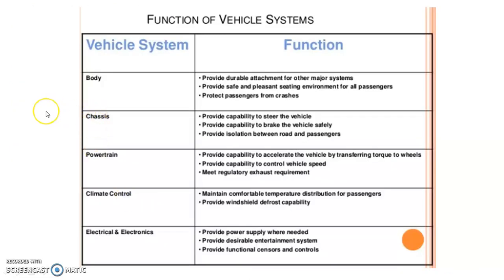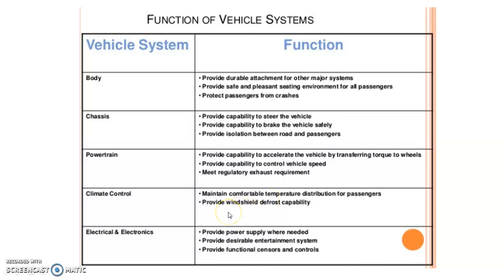Let us see what are the functions of vehicle systems. Body is the first vehicle system — it provides durable attachment for other major systems, provides safe and pleasant seating environment for passengers, and protects passengers from crashes. Chassis provides capability to steer and brake the vehicle safely, and provides isolation between the road and passengers. The powertrain provides capability to accelerate the vehicle by transferring torque to the wheels, control vehicle speed, and meet regulatory exhaust requirements. Climate control maintains comfortable temperature distribution and provides windshield defrost capability. Electrical and electronics systems provide power supply, entertainment, and functional sensors and controls.